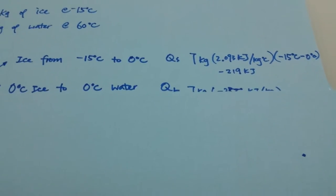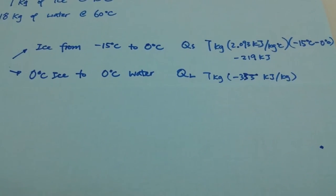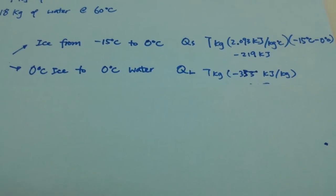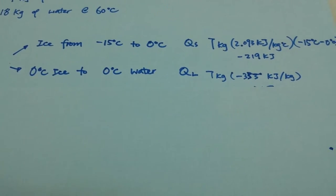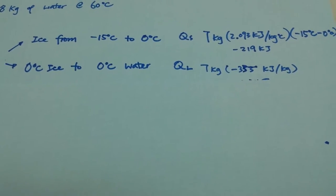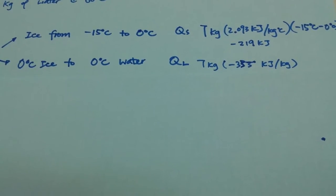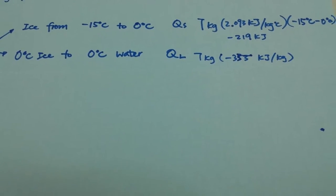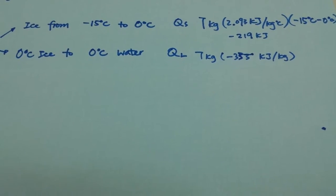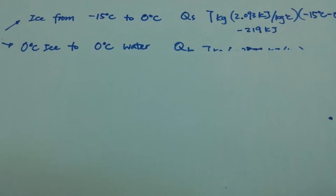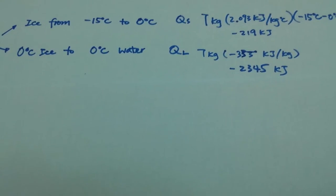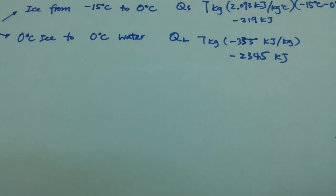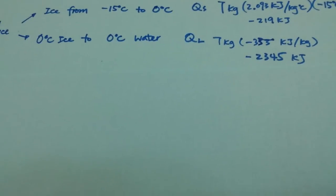And then the second step of our ice is that we have to go from zero degree ice to zero degrees water. So it's the latent heat. That's 70 kilograms times negative 335 kilojoules per kilogram. So that's our latent heat from the ice to water.